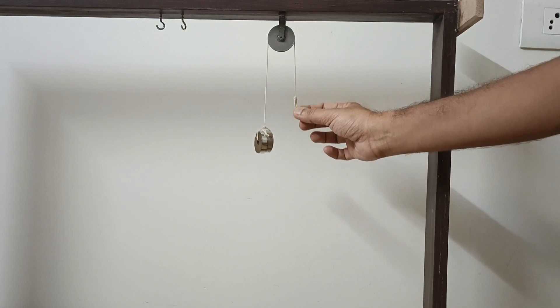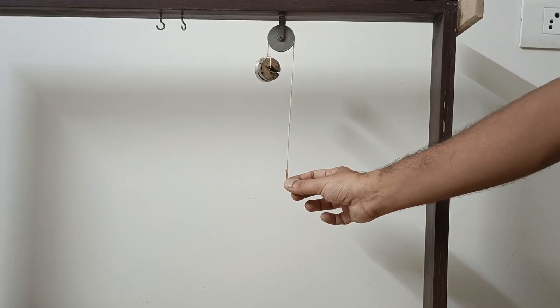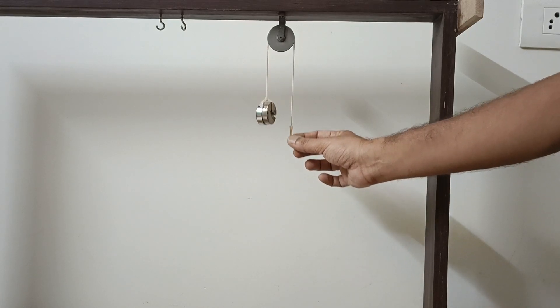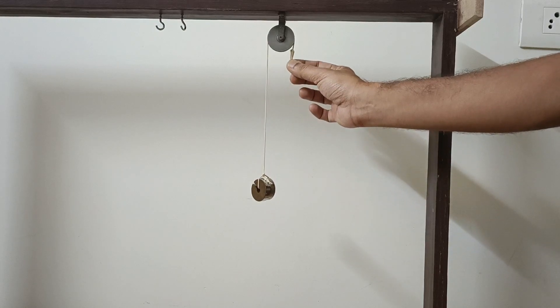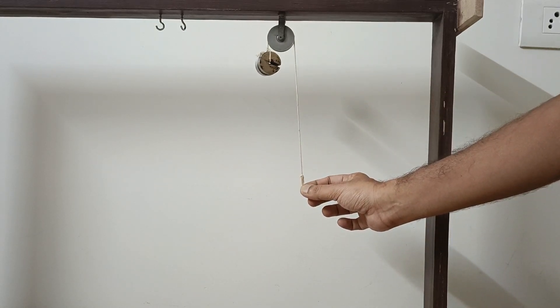You can clearly see that the distance moved by the effort is same as the distance moved by the load. So in ideal conditions, displacement of effort to the displacement of load ratio is velocity ratio, which turns out to be one.